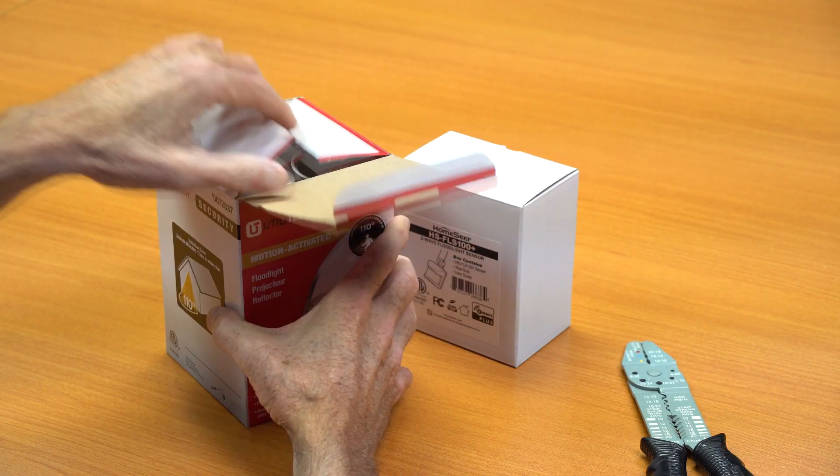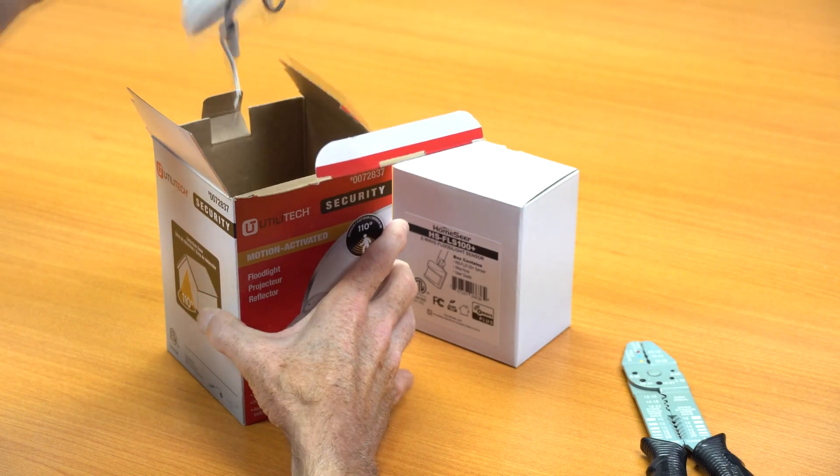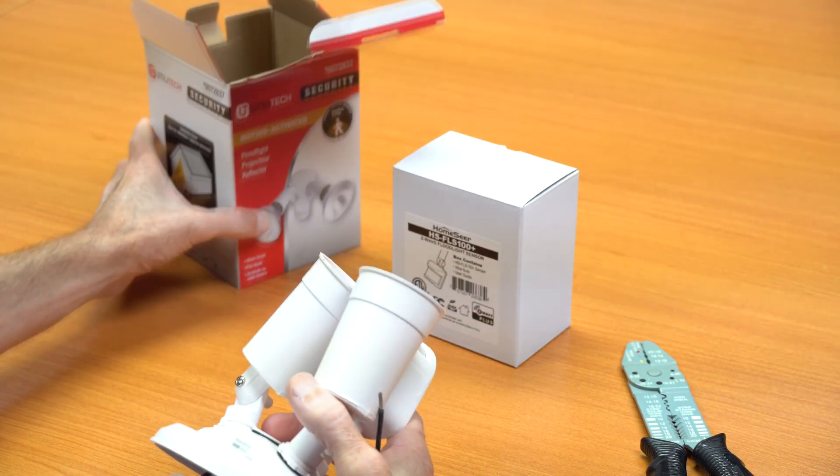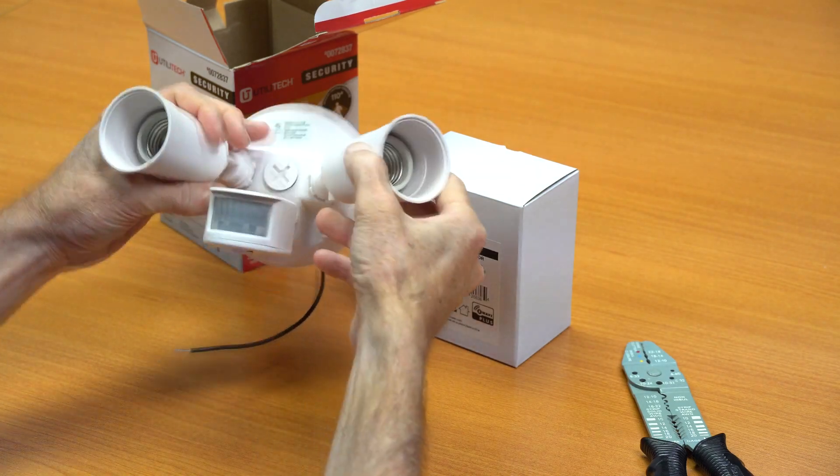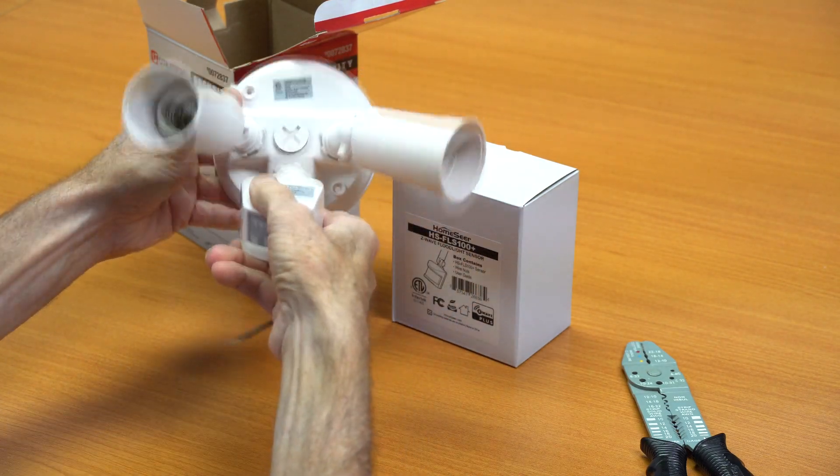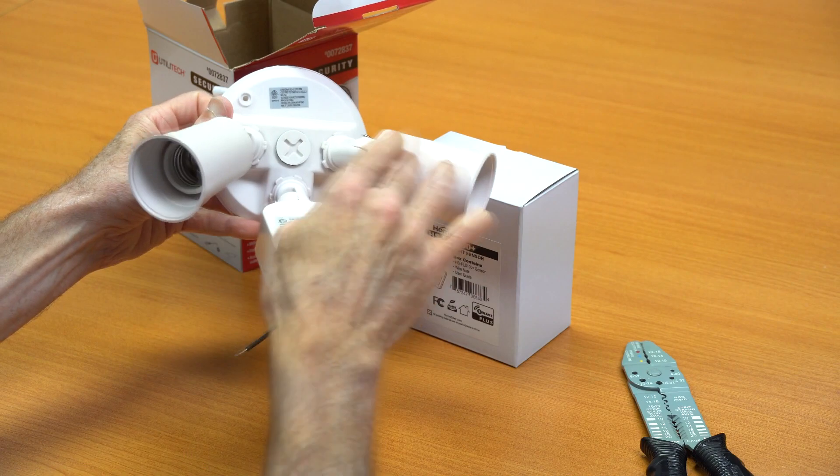Before I go ahead and install it, let's just take a quick look at how these units are typically configured. First of all, on the front of the unit, you're going to see the sensor at the bottom and you'll see two different floodlight bulb sockets at the top. All of these are adjustable with respect to their position.